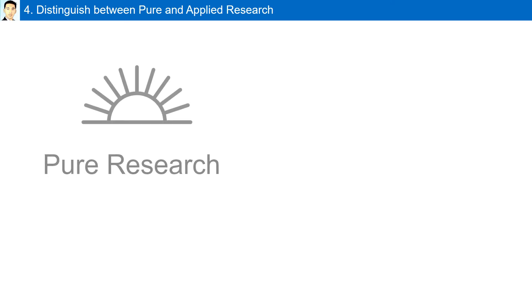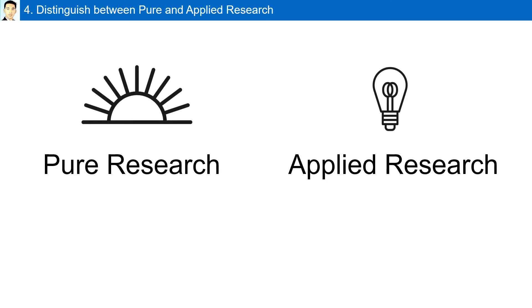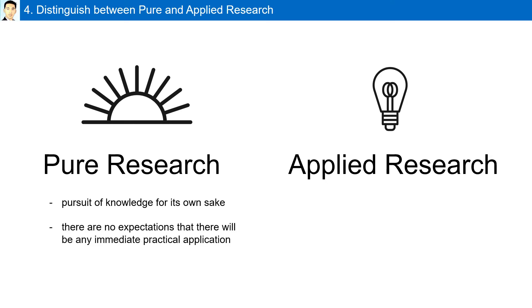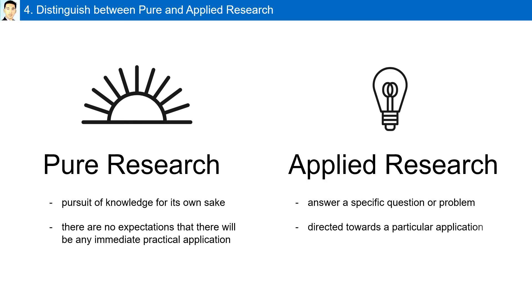Distinguishing between pure and applied research: scientists basically conduct two types of research — pure or basic research and applied research. Pure research is the pursuit of knowledge for its own sake, with no expectations of immediate practical application. Applied research is carried out to answer a specific question or solve a specific problem, and it is directed towards a particular application.